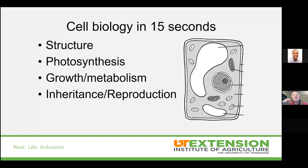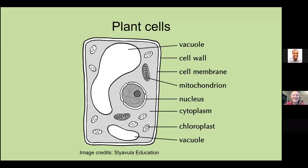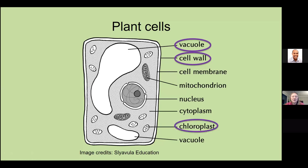I don't want to take you back to high school biology, but we're going to discuss cell biology in about 15 seconds. The functions of plants are why we care about cell biology. Vacuoles and cell walls provide rigidity to our plants — that is a major plant function. Chloroplasts help with photosynthesis. Mitochondria store our genetic materials. The nucleus is obviously the brain of the cell. That's all we're covering on that.